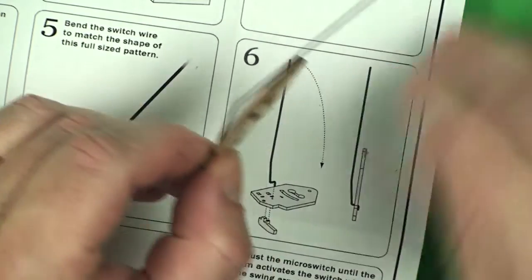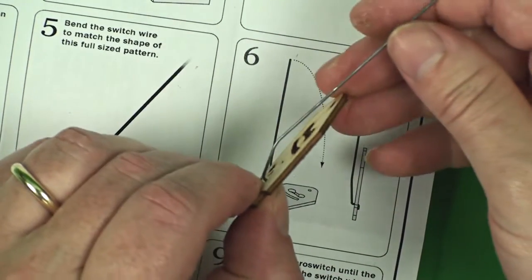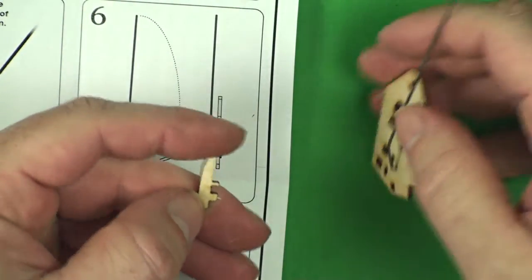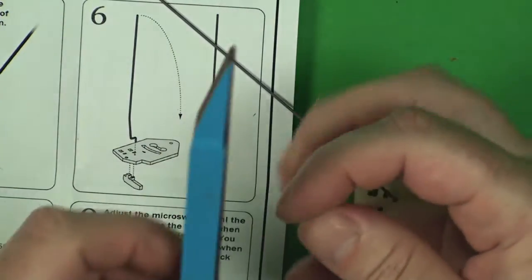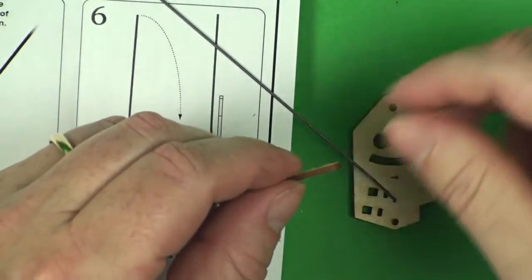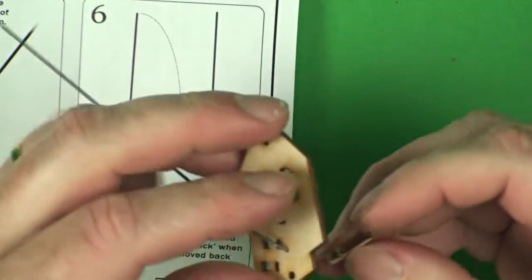And then we also glue on our little switch triggers. There's two of those. The reason there's two is if you're using two micro switches. Most of the time you'll only be using one, and that's all I'm going to use on this one.